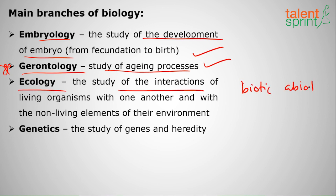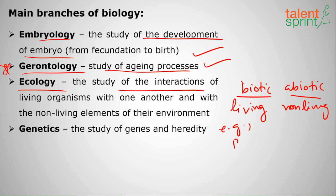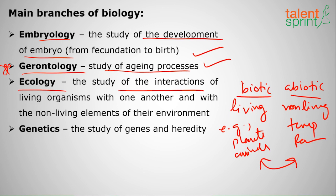Next is ecology: the study of how biotic and abiotic factors of life interact with each other. Biotic means living — plants, animals — and abiotic means non-living, such as temperature and rainfall. How living organisms interact with their environment is the study of ecology or the ecosystem.